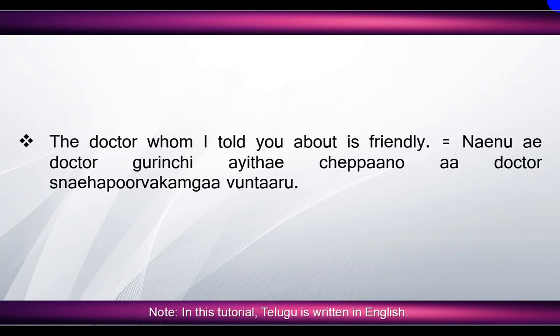'The doctor whom I told you about is friendly' means the doctor I told you about. 'Whom' means 'yavari gurinchi'. 'About' means 'gurinchu', 'you' means 'meeku'. 'Friendly' means 'sneha poorvakam ga'. 'Is' means 'untaaru' — actually 'is' means 'unnaaru', but since we are talking generally, we can say 'untaaru'.